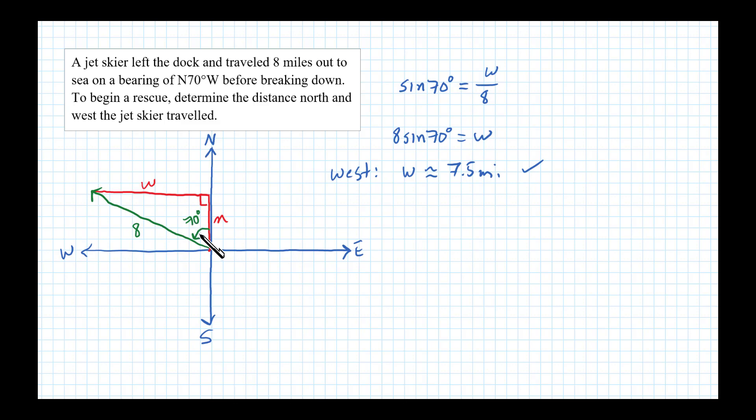Okay, now to find n, notice that's the side adjacent to the 70 degrees, so we'll use cosine. Cosine of 70 degrees is equal to adjacent over hypotenuse.